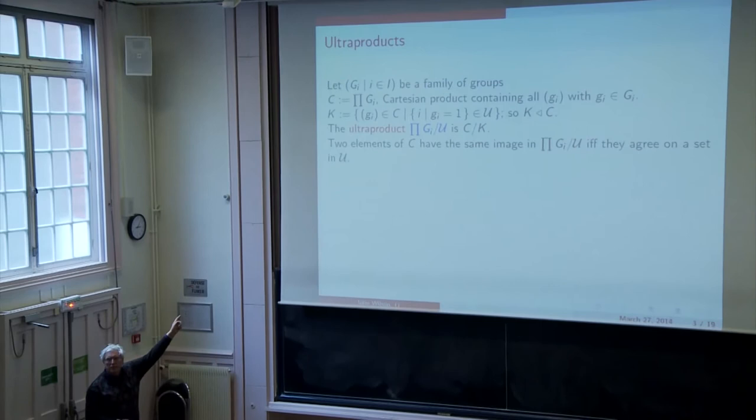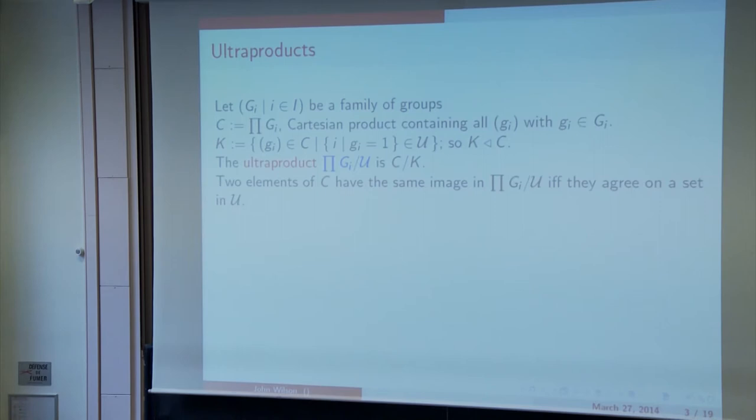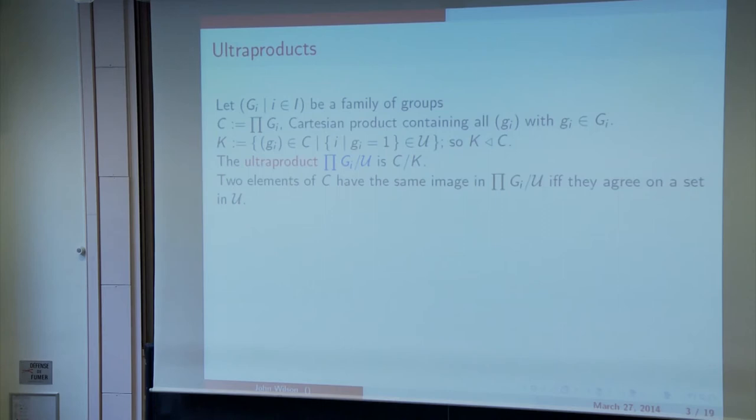Now, ultraproducts. Again, we have a family of groups, which we might as well assume is a sequence indexed by the integers. Take the Cartesian product and factor out from it the normal subgroup K, consisting of all sequences almost all of whose terms are equal to one, almost all in the sense of the ultrafilter. So it's a normal subgroup and you can make the quotient group. That is the abstract ultraproduct of these groups. Two elements have the same image if they agree on a set in this ultrafilter.